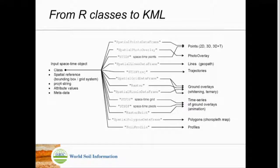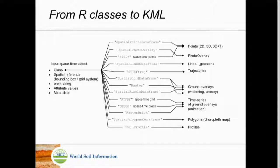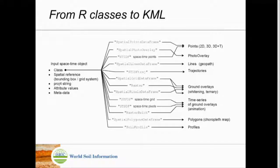When I started making plotKML I was more interested in templates — what I want to visualize and how. My colleague Pierre told me that if you want to make a state-of-the-art R package, you have to make one that works with classes and methods. You have to look at the classes — that's really where you start if you want to design a package properly. This is called object-based programming, and the latest implementation of classes in R is called S4 — the fourth generation of S classes.